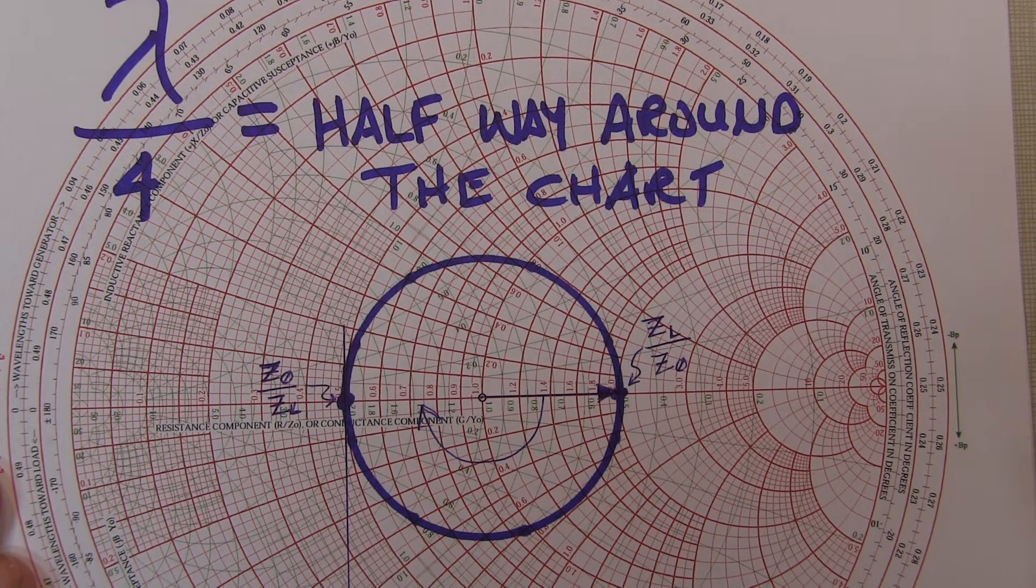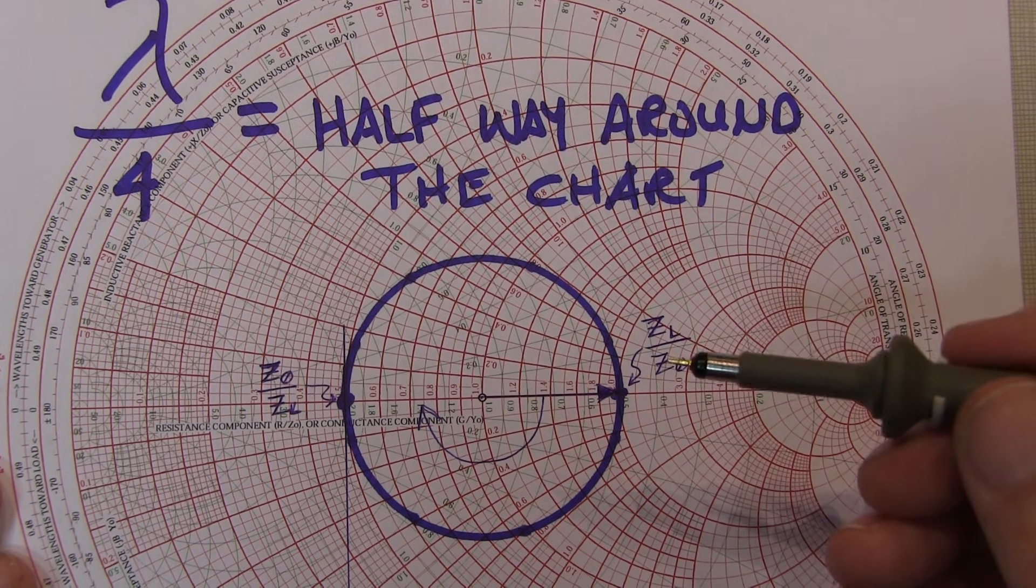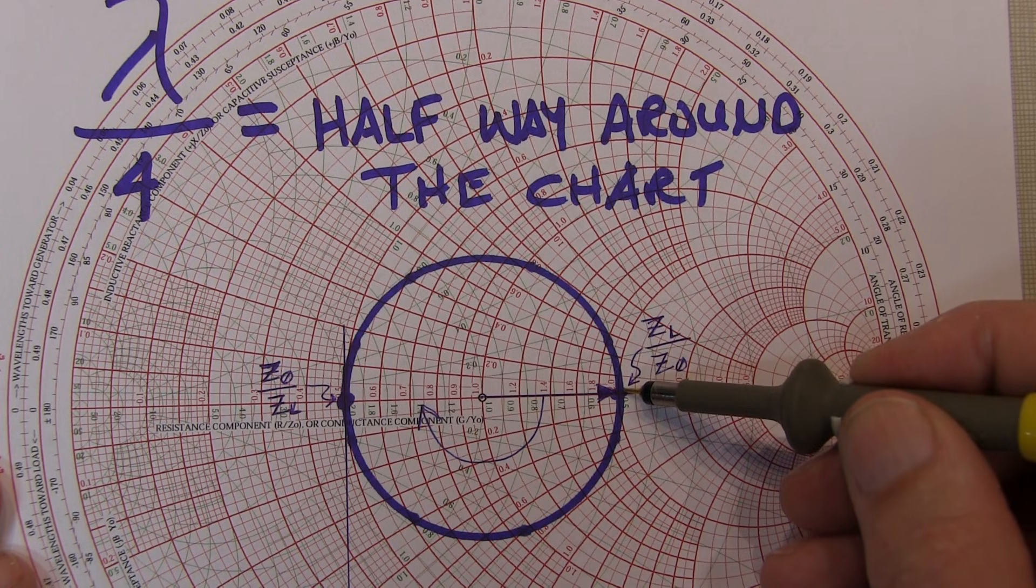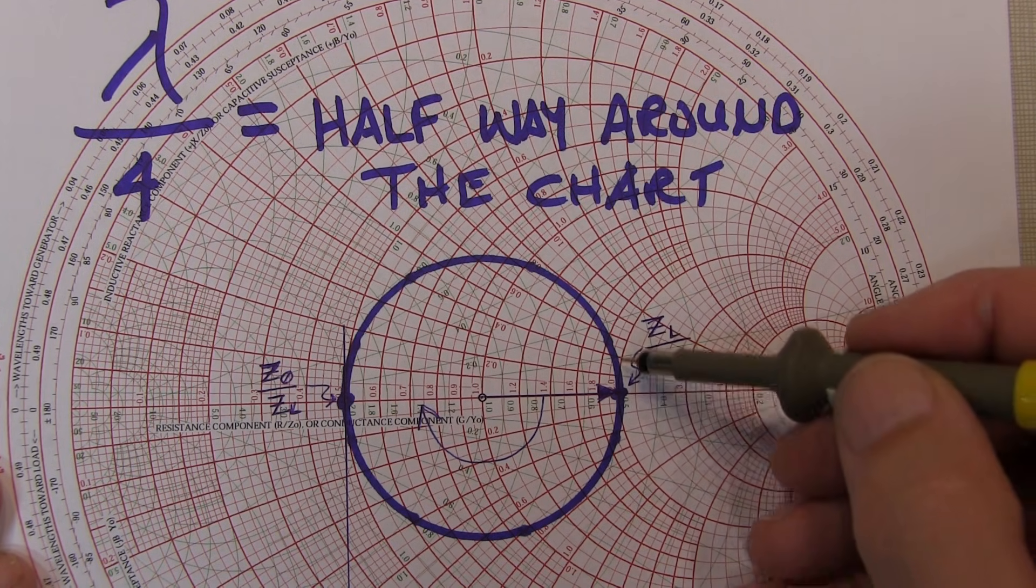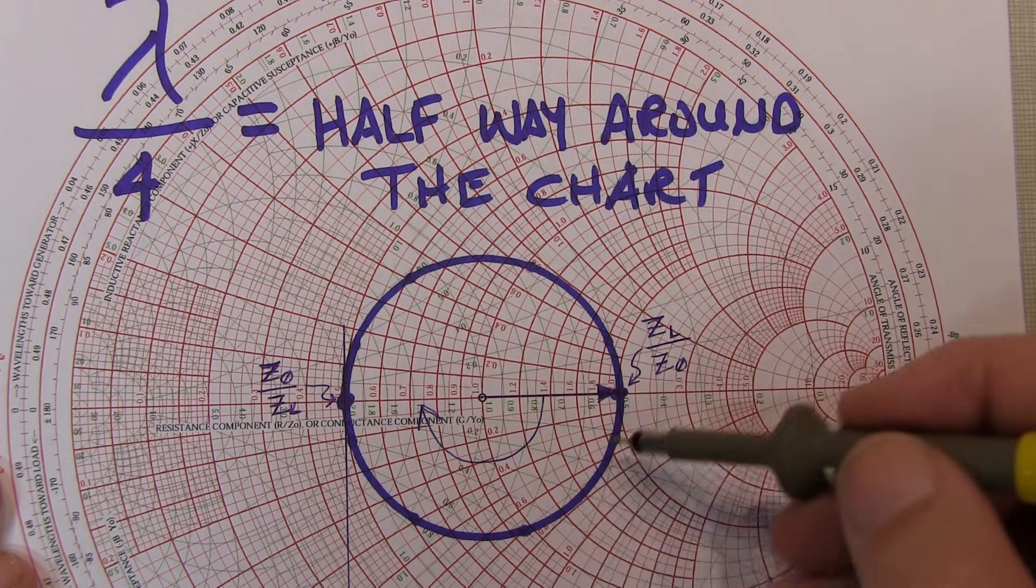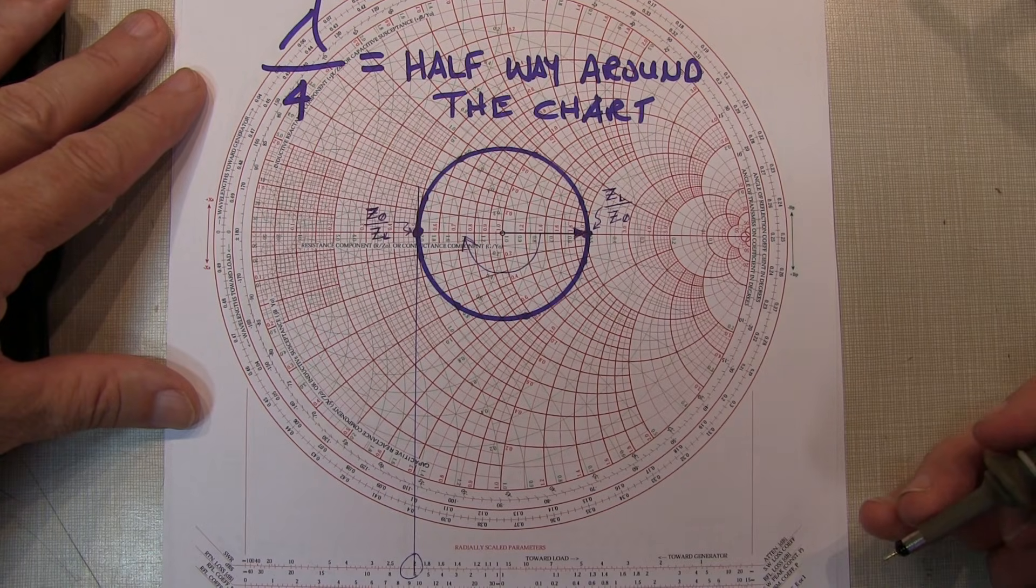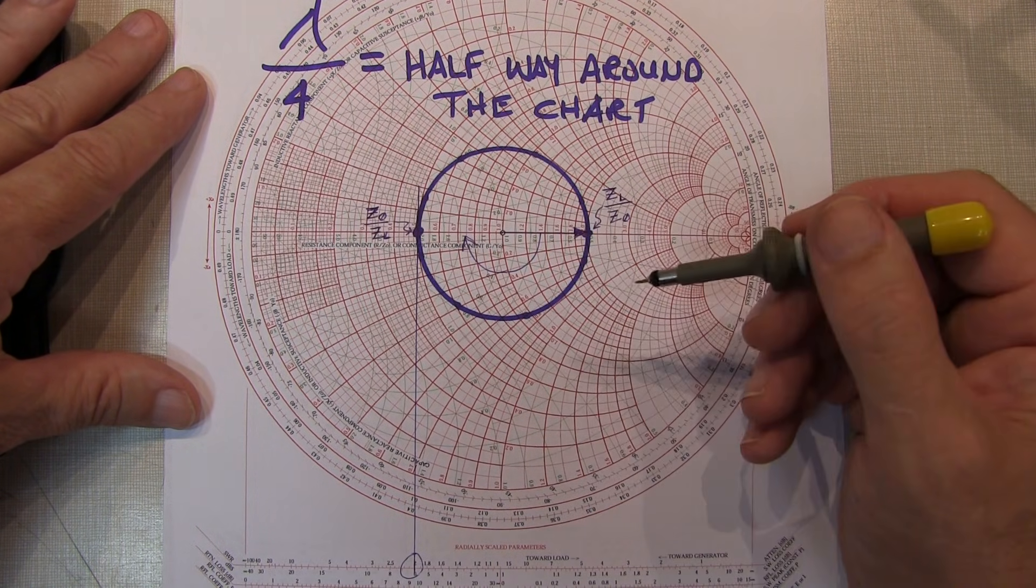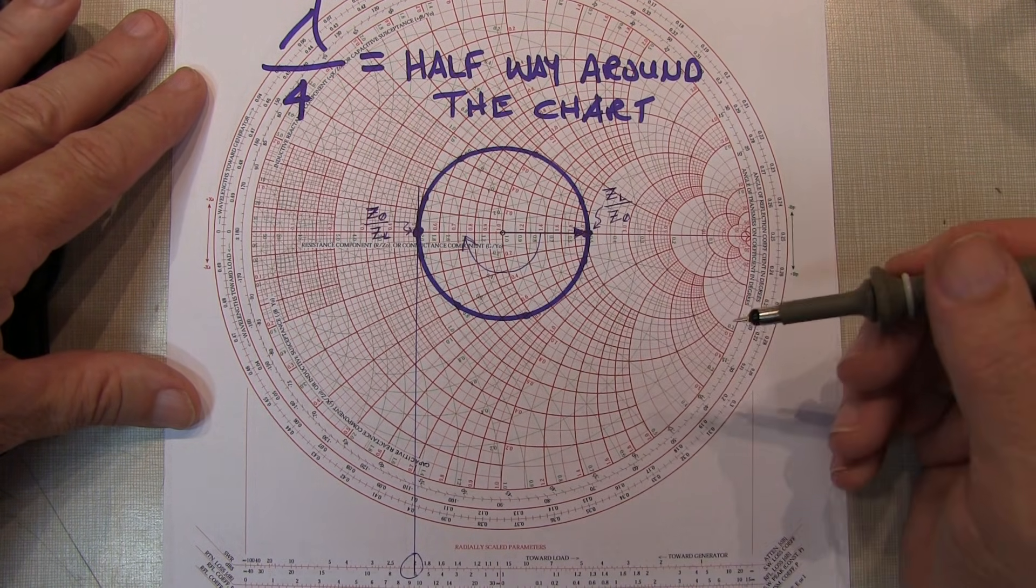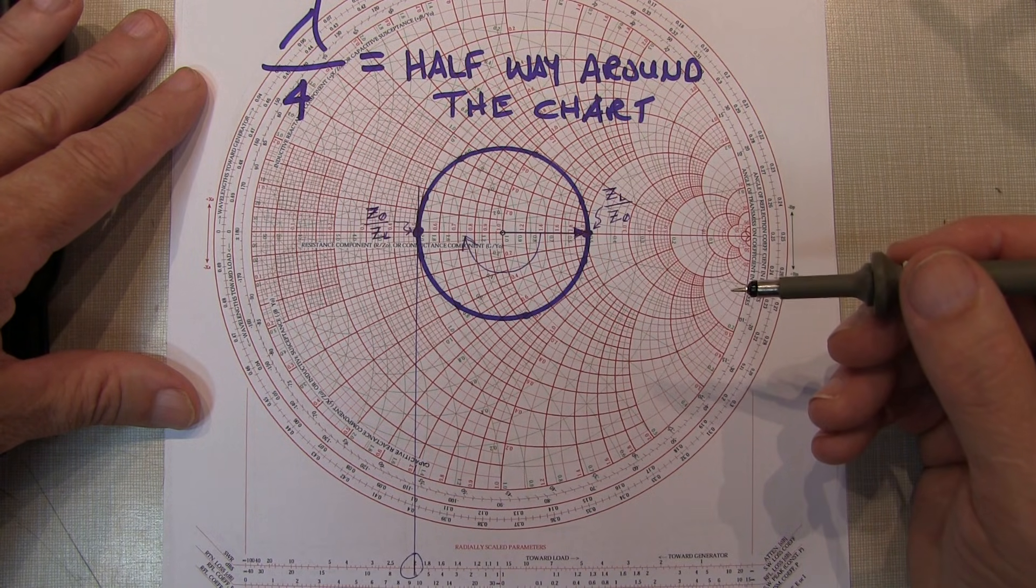Another way to think about this is that if you have some random length of coax connected to this 100-ohm load, the impedance looking into that line is going to lie somewhere on this circle. Now another thing we know is that a 100-ohm load in a 50-ohm system or a 25-ohm load in a 50-ohm system both result in an SWR of 2-to-1.